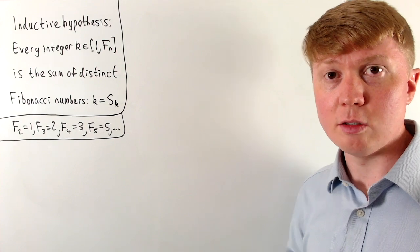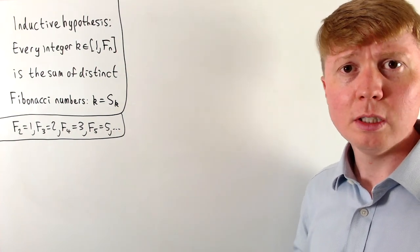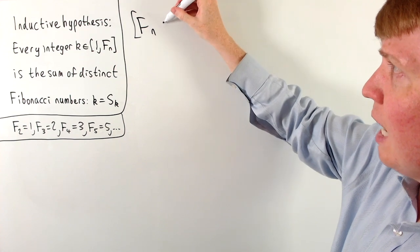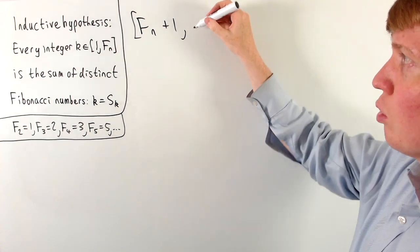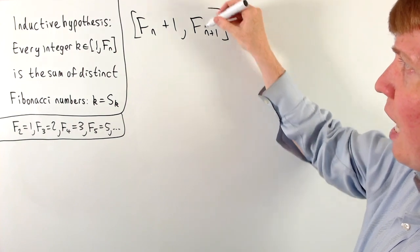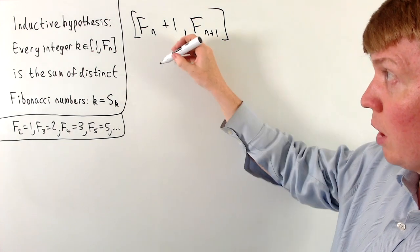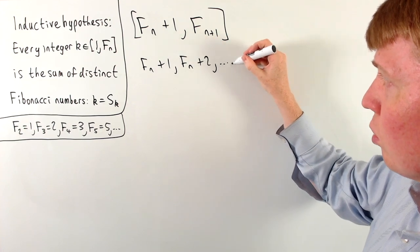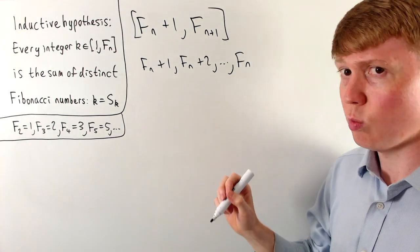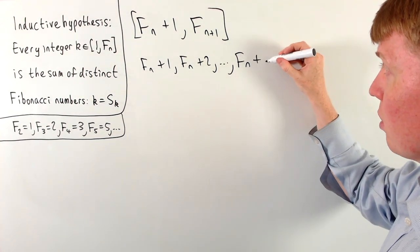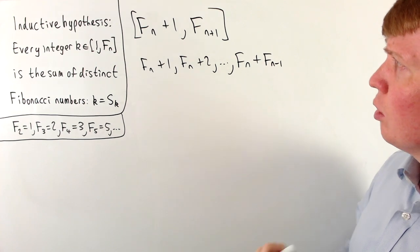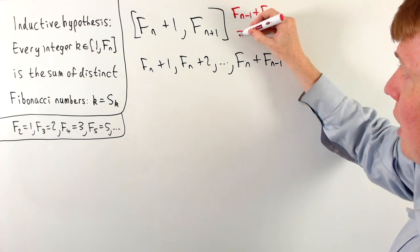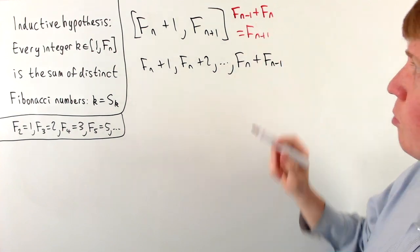For our base case, this is easy to check, even up to F5 for example. Then we want to show we can extend this using the inductive hypothesis from Fn plus 1 all the way up to the next Fibonacci number, Fn+1. To do this, we write them as Fn plus 1, Fn plus 2, and so on, all the way up to Fn plus Fn−1, because the defining feature of Fibonacci numbers is that the previous two terms sum to give the next term — so Fn+1 equals Fn plus Fn−1.